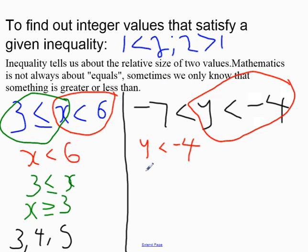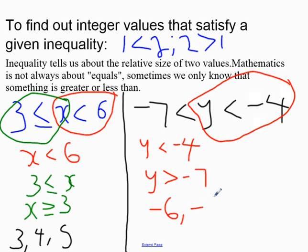If I put the y in front, the sign has to change to the other way, giving y greater than negative 7. So the whole numbers that are greater than negative 7 but less than negative 4 will be negative 6 and negative 5. It has to be less than negative 4, remember. So these are the integers that satisfy this given inequality.